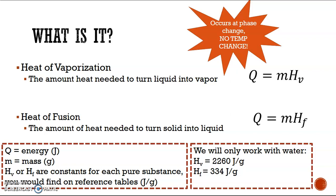So what is it? We've got the heat of vaporization, which is the amount of heat needed to turn a liquid into a vapor. And we have the heat of fusion, which is the amount of heat needed to turn a solid into a liquid. So we're looking at phase changes as we change from one phase into another.